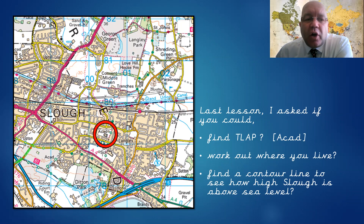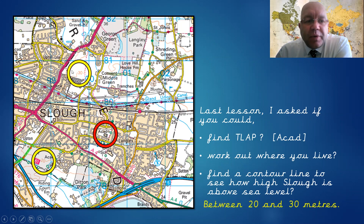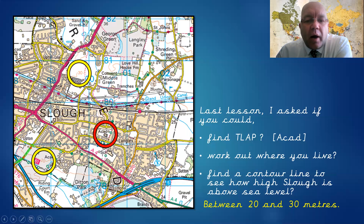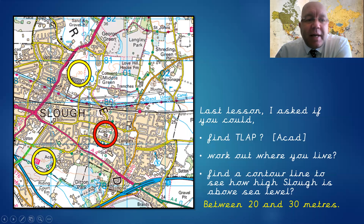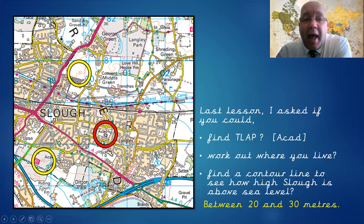The final question was: can we find the contour lines to identify how high Slough is above sea level? There are a few contour lines visible, and there are numbers there and there. You can see that one contour line tracks all the way around at 30 metres, and this one is at 20 metres. Slough falls between these two, so depending on where you are, we're somewhere between 20 and 30 metres above sea level. Across one side of Slough to the other, we've only climbed 10 metres, so Slough is a very flat town — not a lot of ups and downs.